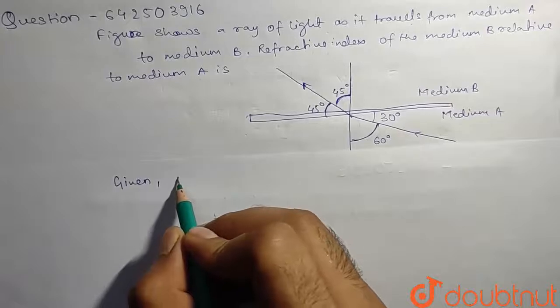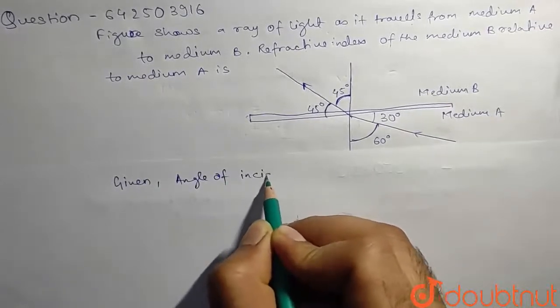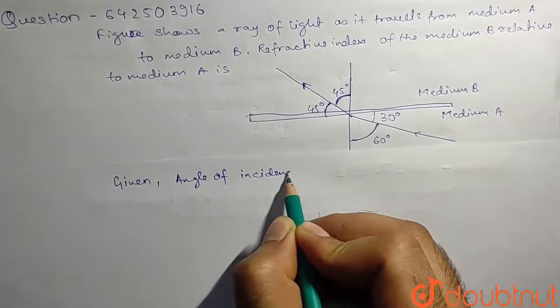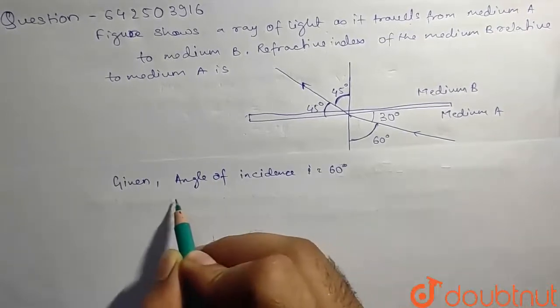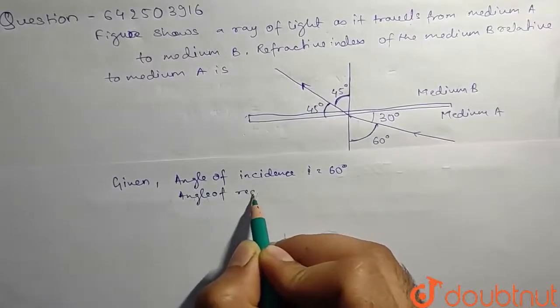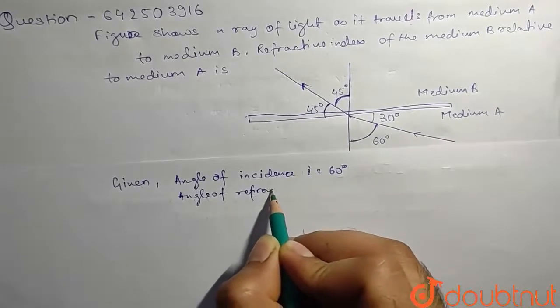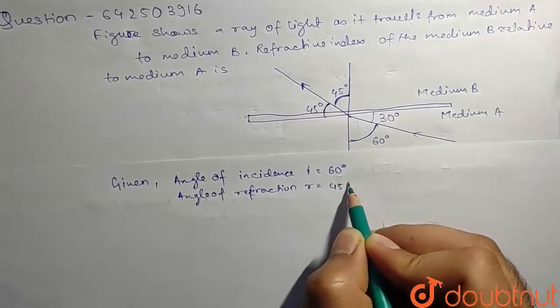Given: angle of incidence i equals 60 degrees, angle of refraction r equals 45 degrees.